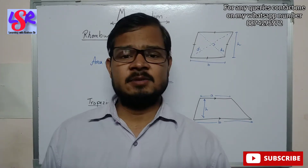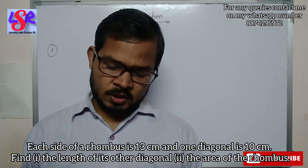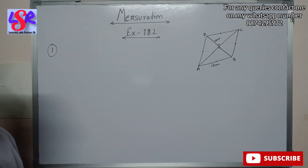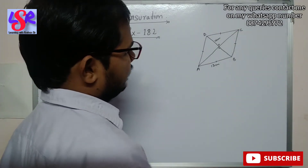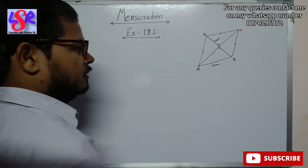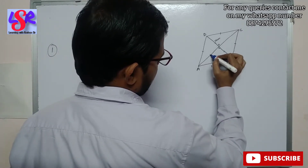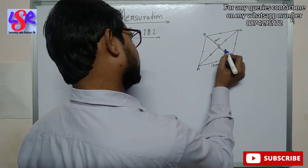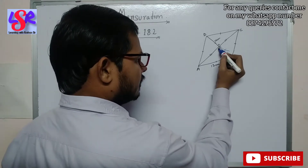Now let's begin with exercise 18.2, question 1. Each side of a rhombus is 13 centimeters and one diagonal is 10 centimeters. Find the length of the other diagonal and the area of the rhombus. As per the figure, the side is 13 cm and one diagonal is 10 cm. Since the diagonals of a rhombus bisect each other, each half of that diagonal is 5 centimeters.